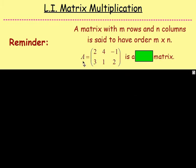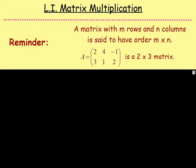This matrix here, Matrix A — what would the order of that be, Avina? Perfect! That there has got two rows, so it would be order 2 by, and there are three columns. So that would be a 2 by 3 matrix, Avina.